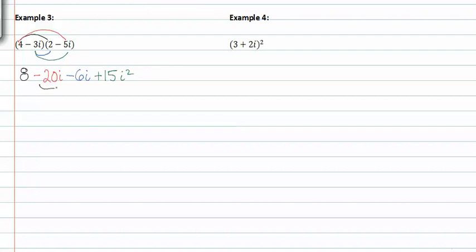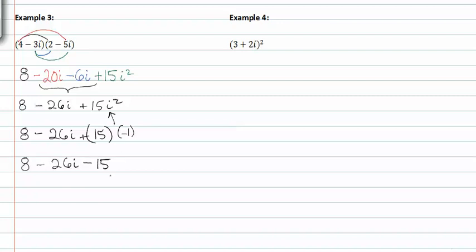We can combine like terms and we now have eight minus twenty six i plus fifteen i squared. From here we know that i squared is negative one. Let's go ahead and fill in all the other pieces and simplify this further. From here we know that positive fifteen times negative one will give us a negative fifteen.